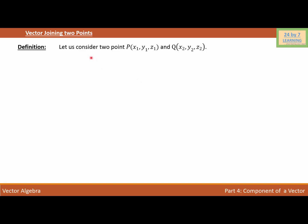Let us consider two points P(x1, y1, z1) and Q(x2, y2, z2). I'm going to consider a three-dimensional space with an x-axis, y-axis, and z-axis, with origin O. The vector along the x-axis is vector i, the vector along the y-axis is vector j, and the vector along the z-axis is vector k.